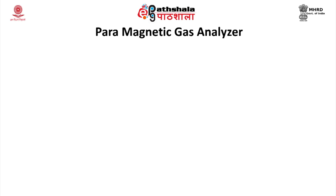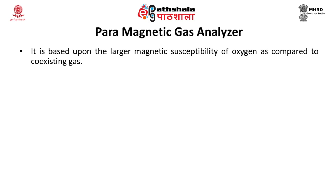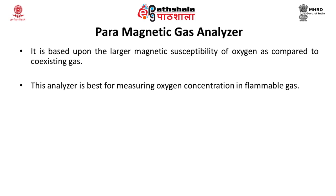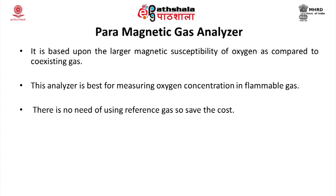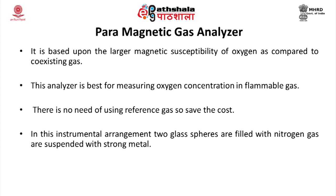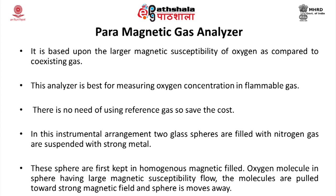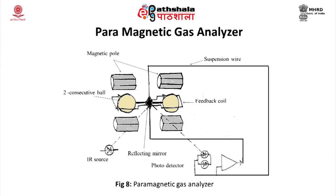The paramagnetic gas analyzer is based upon the large magnetic susceptibility of oxygen compared to other coexisting gases. It is best for measuring oxygen concentration in flammable gases, with no need for a reference gas, thus saving cost. In this arrangement, two glass spheres filled with nitrogen gas are suspended with a strong metal wire and kept in a homogeneous magnetic field. Oxygen molecules have large magnetic susceptibility and are pulled toward the strong magnetic field, causing the spheres to move away. This deviation is detected by a light source, reflecting mirror, and light-receiving element. Current flows through a feedback loop to return the spheres to the initial balanced state, and this current is proportional to the oxygen concentration.